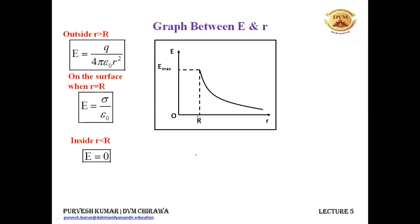Before distance r, the electric field is 0, marked with the red line on the graph. At r equals R, it is the maximum value E max, which is sigma upon epsilon naught. After that it decreases as an inverse square. This is a very important graph — sometimes they may ask it in the exam. This is all for today's class.